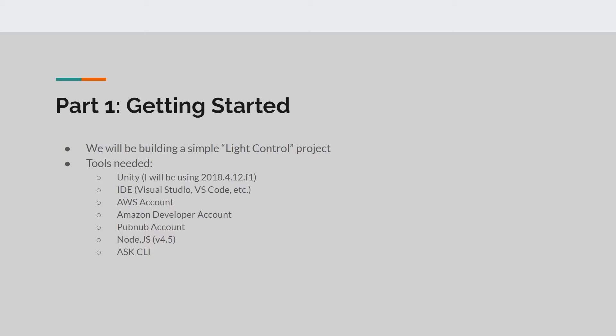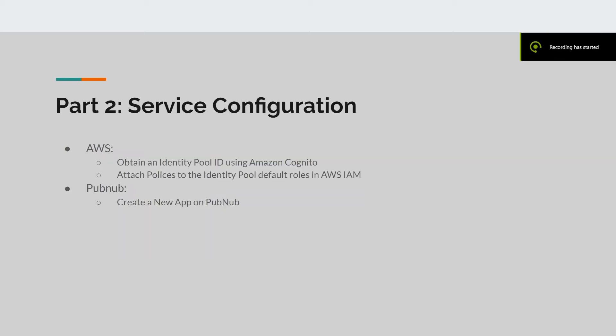Once you have all these items, we can begin our service configuration. We have two cloud services we will be using. The first is AWS and the second is PubNub. During this section, we will go into AWS and create an Amazon Cognito identity pool and attach policies to this identity pool to give access to our DynamoDB table for our LX system. In PubNub, we will create a new app to enable real-time messaging between the skill and the game.